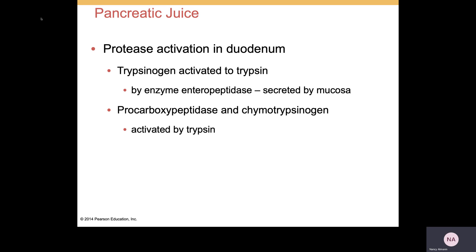The proteases do need to be activated. Trypsinogen in its inactive form is going to be activated to trypsin by enteropeptidase, which is secreted by the intestinal mucosa. Procarboxypeptidase and chymotrypsinogen will then be activated by trypsin.